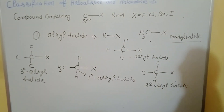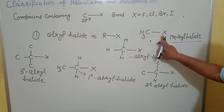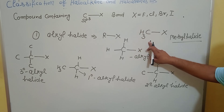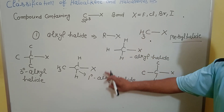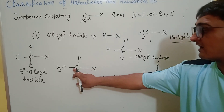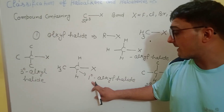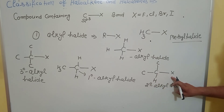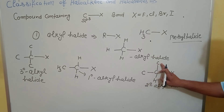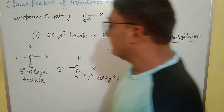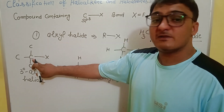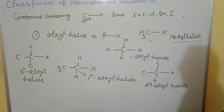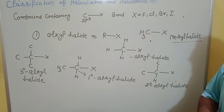To summarize: methyl halide is when the halogen-bearing carbon is directly attached to three hydrogens (no carbons). Primary alkyl halide is when that carbon is attached to one carbon. Secondary alkyl halide is when it is attached to two carbons. Tertiary alkyl halide is when it is attached to three carbons.